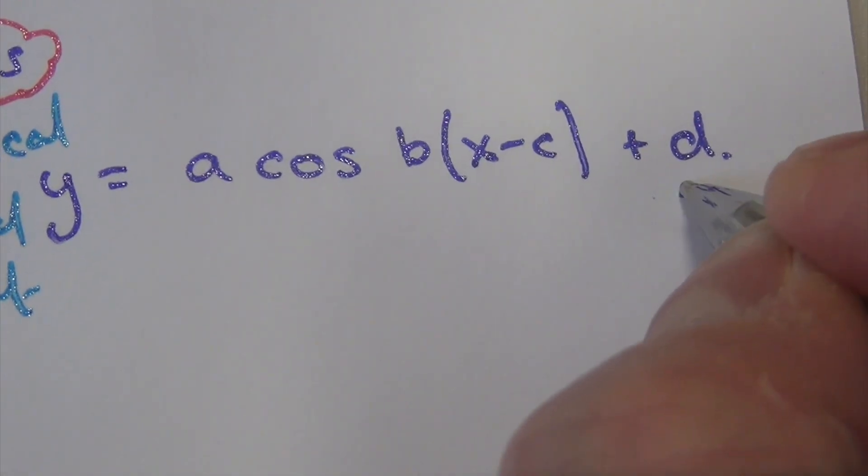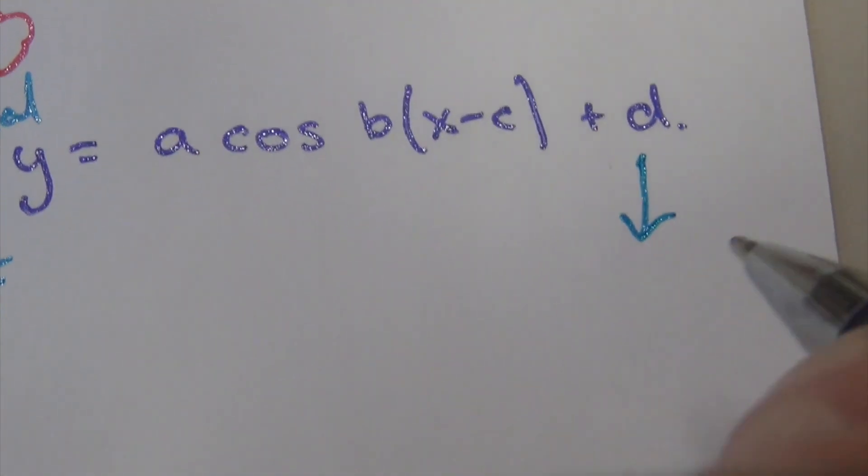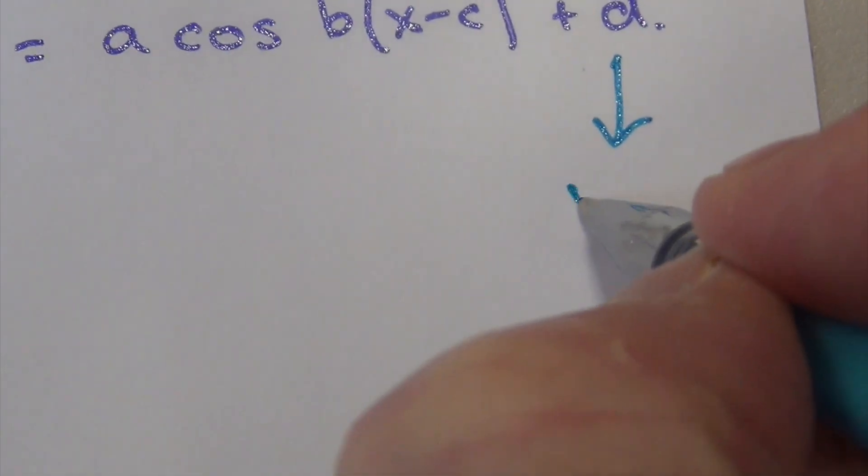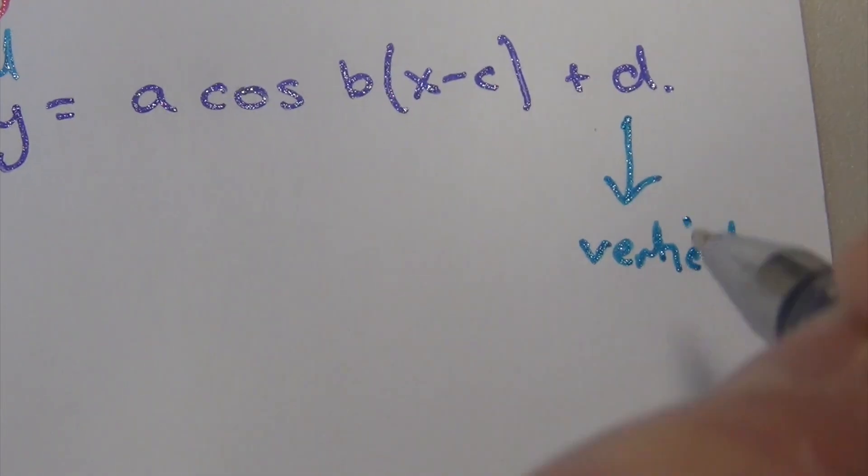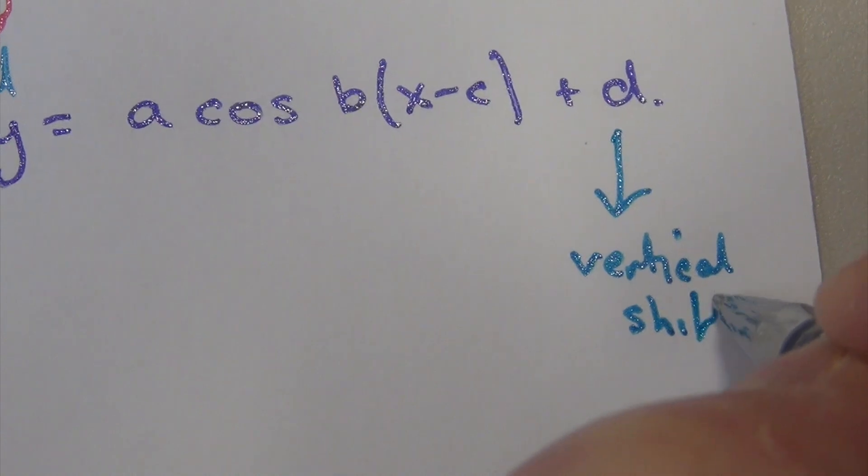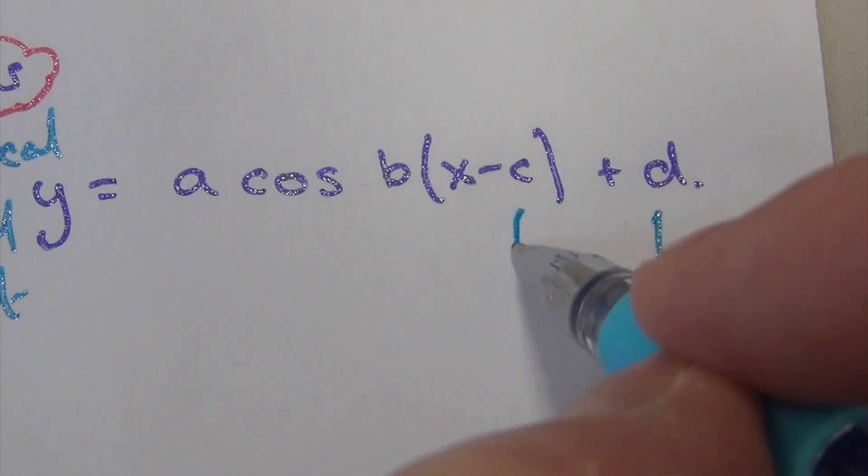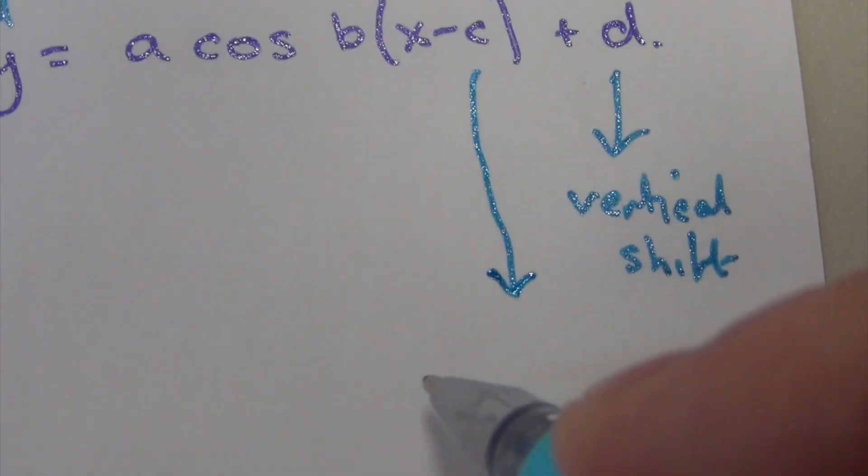Let's work backwards to give us some more space. This is the vertical shift, the D. The C is the horizontal shift.